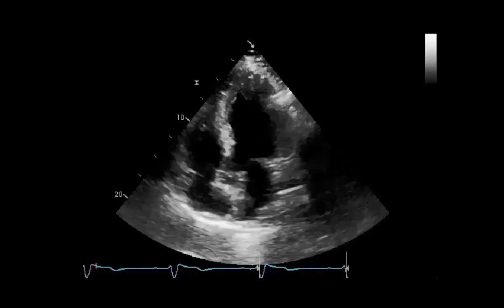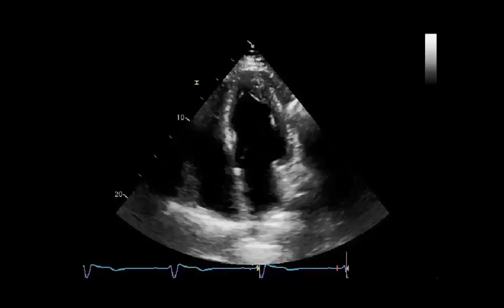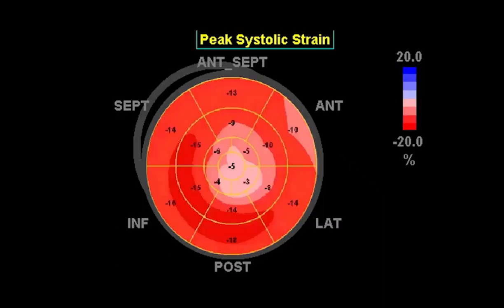This is another example in which the patient has an apical hypertrophy. Note how the bullseye demonstrates decreased strain in the apical segment where the hypertrophy is present.